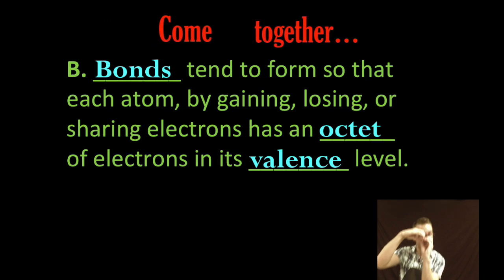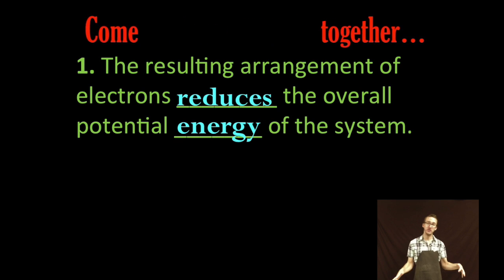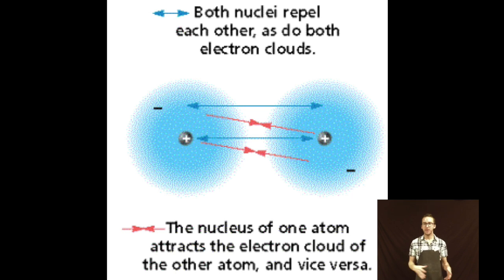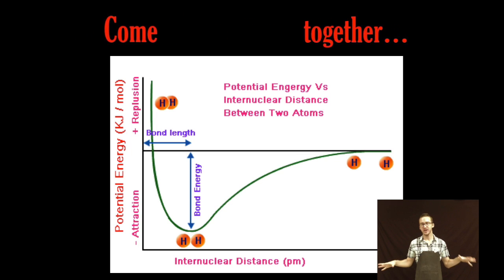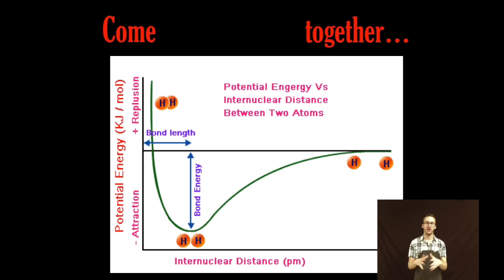or sharing electrons has an octet of electrons in its valence level. Ocho! Eight, the resulting arrangement of electrons reduces the overall potential energy of the system. Again, think about Coulomb's law, sort of an underlying principle to everything that we do in chemistry. You've got attractions, you've got repulsions, positive charges, negative charges. But again, a huge thing to think about here is how can forming a bond reduce our overall potential energy.